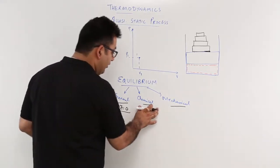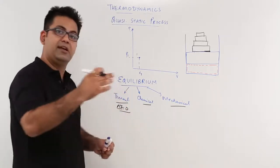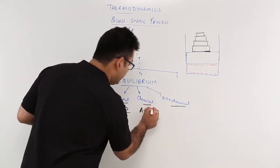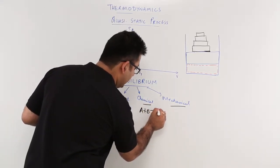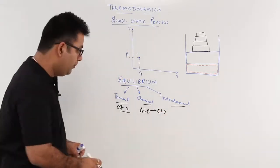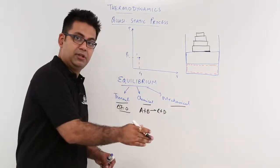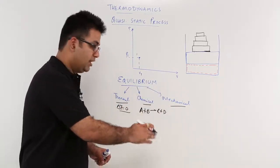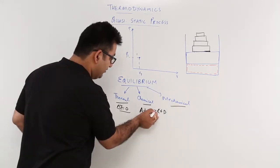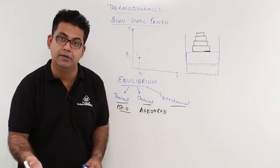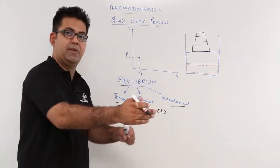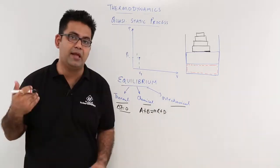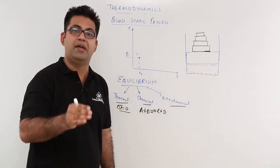Chemical equilibrium means: for a chemical reaction to take place, you have a set of reactants, and from these reactants you get a set of products. From reactants to products is the forward reaction. The rate at which this forward reaction takes place equals the rate of the backward reaction — from products back to reactants. When the rate of forward reaction equals the rate of backward reaction, it becomes a case of chemical equilibrium.